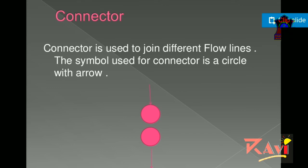Next is connector. It is a circle shaped symbol that is used to join the parts of a flowchart. The symbol used for connector is a circle with an arrow.